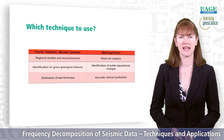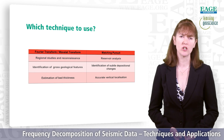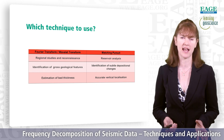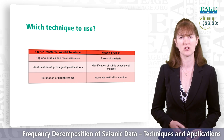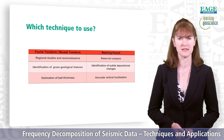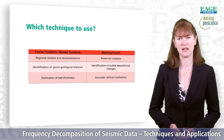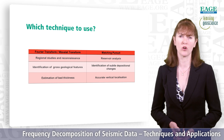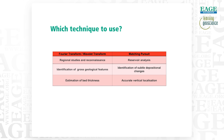Using a Fourier transform or a continuous wavelet transform is very good for regional studies and reconnaissance, where you're looking at large areas and want to understand the geology. It's also good for identification of gross geological features and for estimation of bed thickness, because you get very good frequency resolution. A matching pursuit-based technique, with its good vertical resolution, is better for reservoir analysis, identifying subtle depositional changes, and accurate vertical localization in your results.